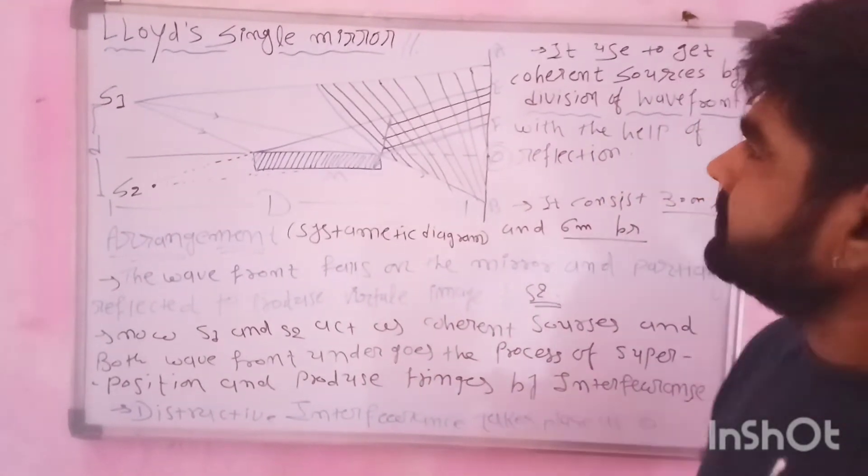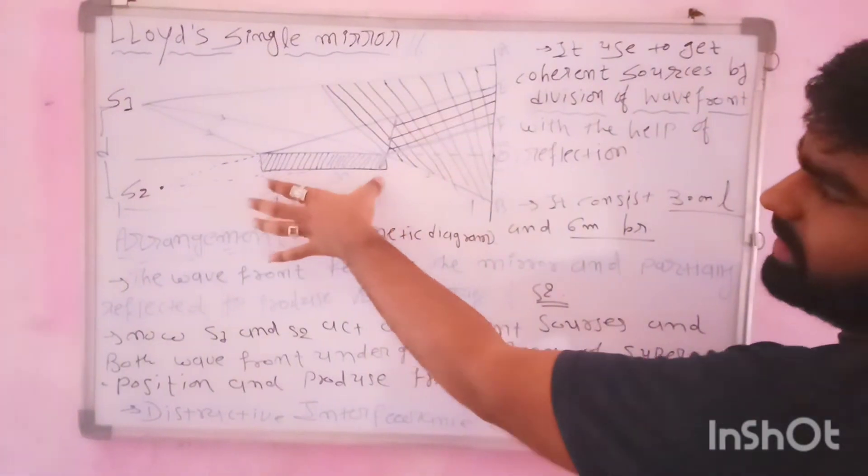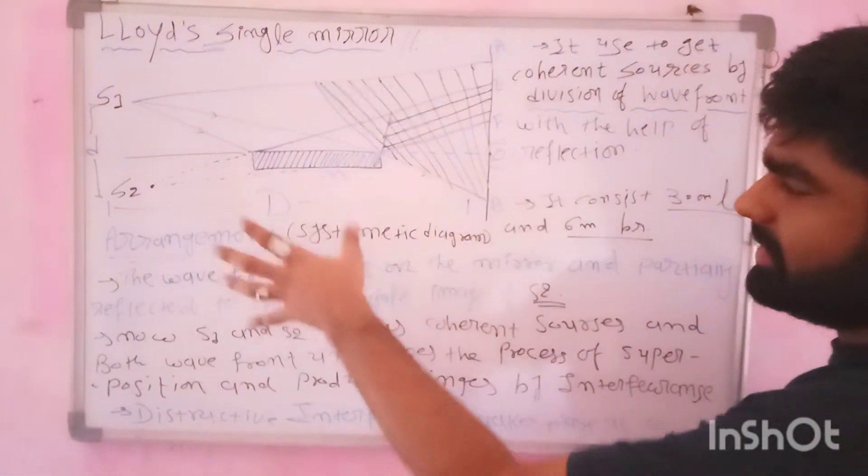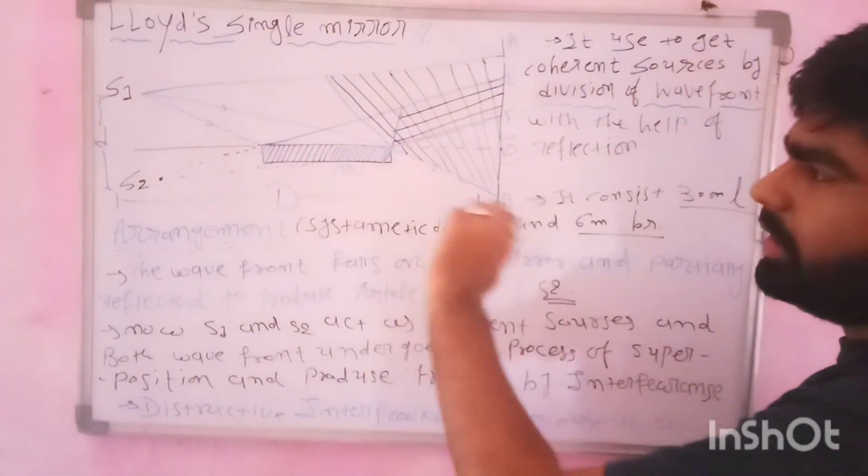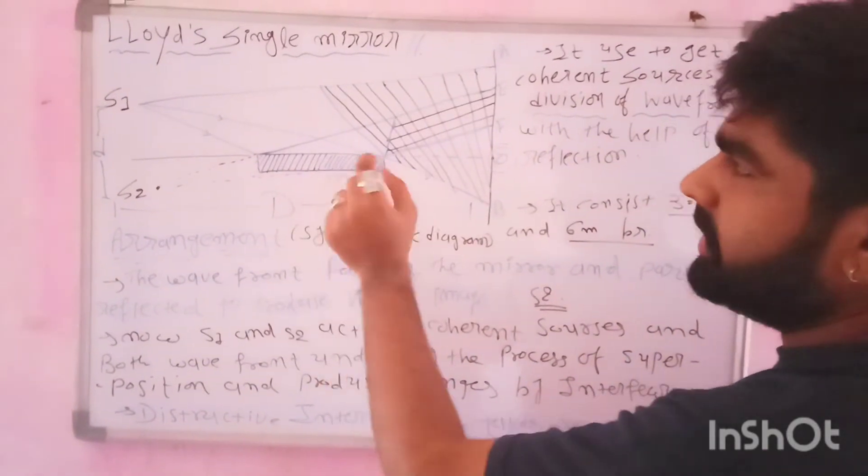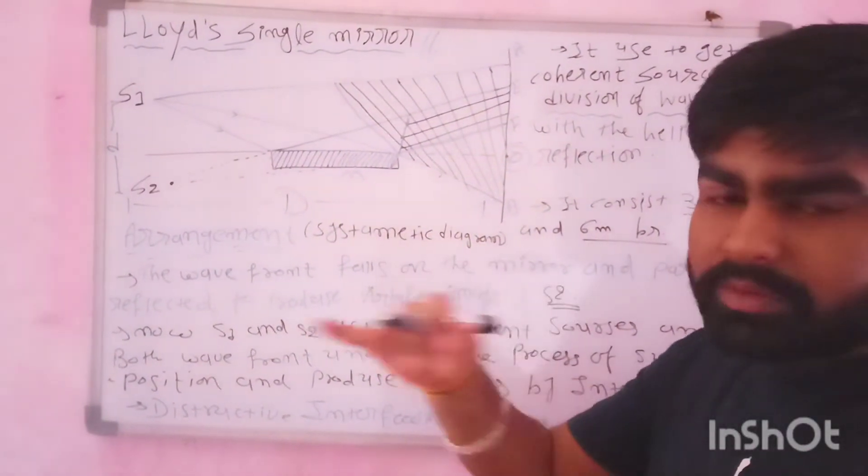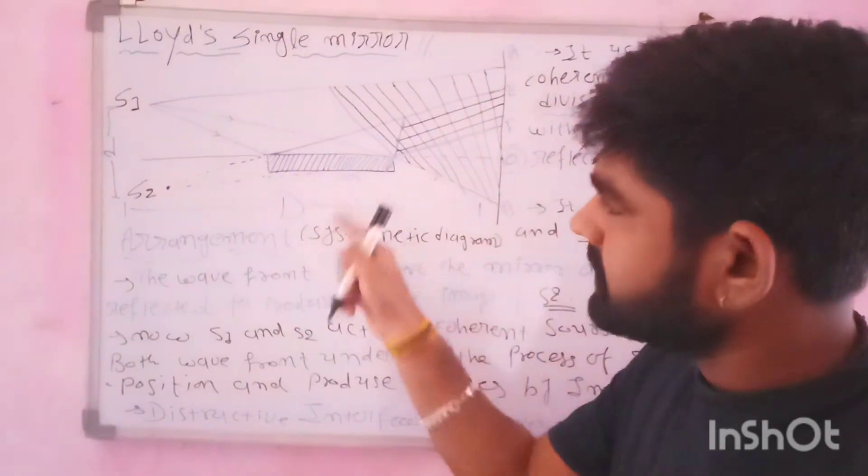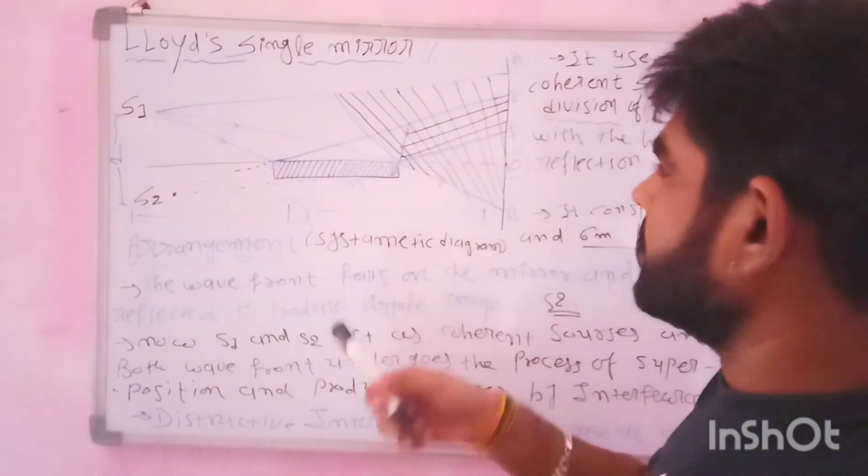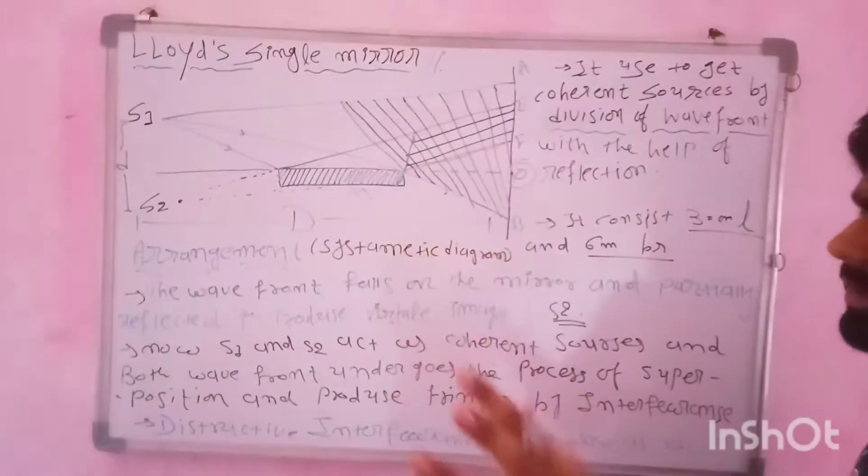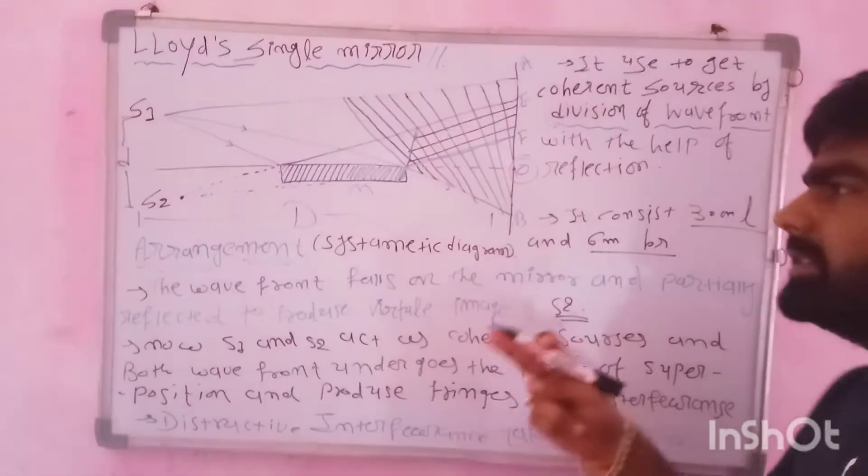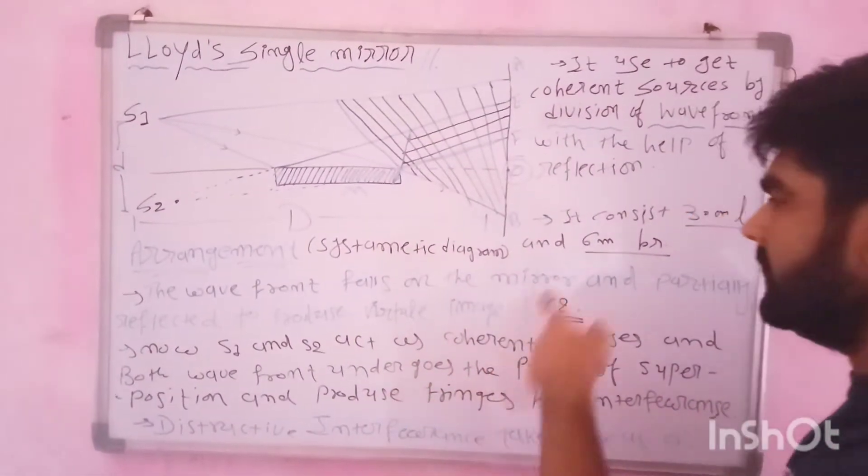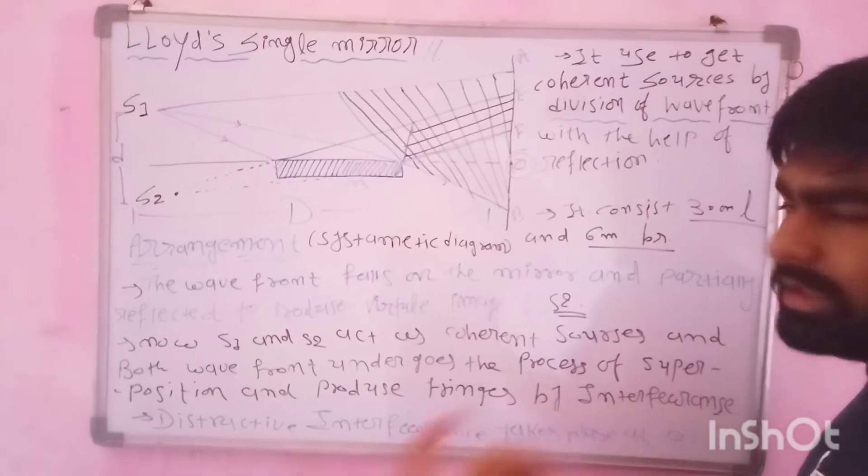I have drawn a systematic diagram here. This mirror is a mirror. The upper portion is very sharp, and the lower portion is colored black. Its approximate length is 30 cm and the breadth is 6 mm.